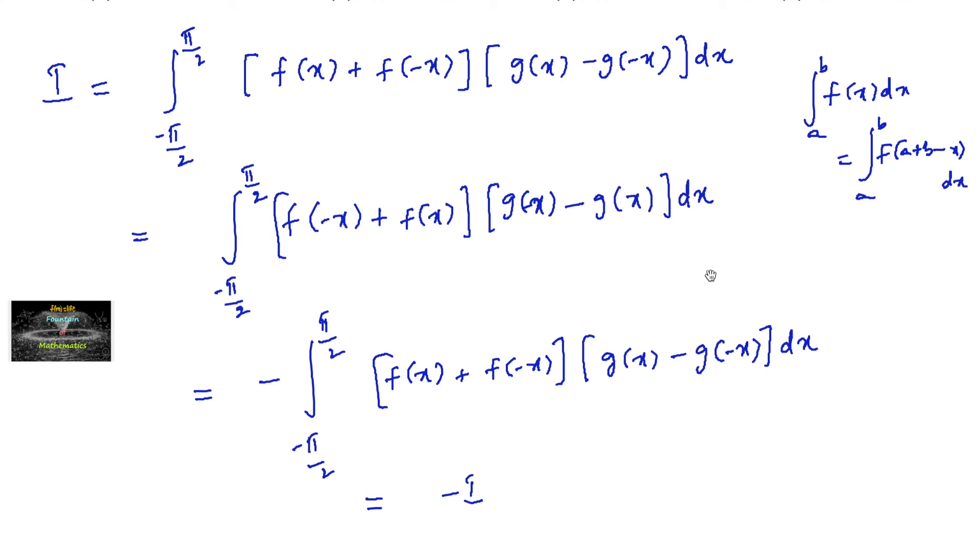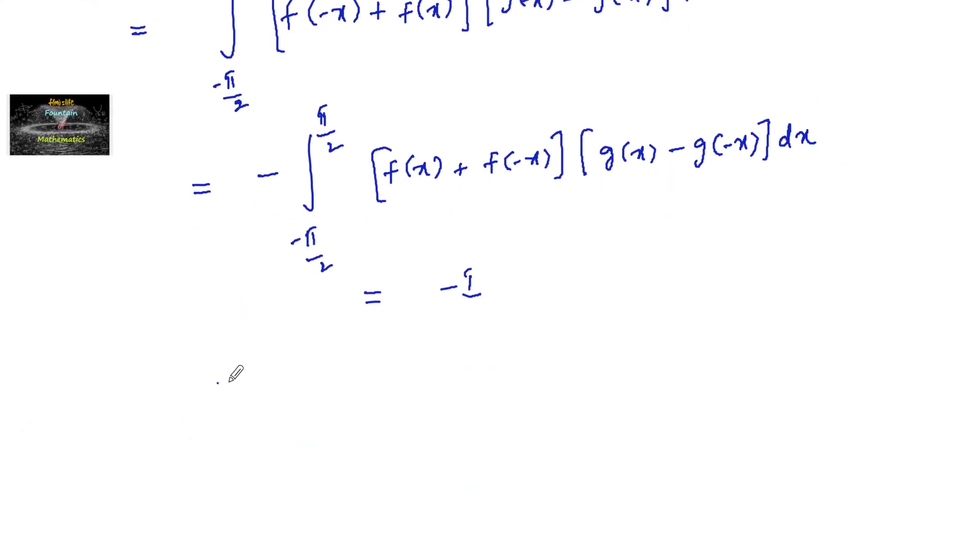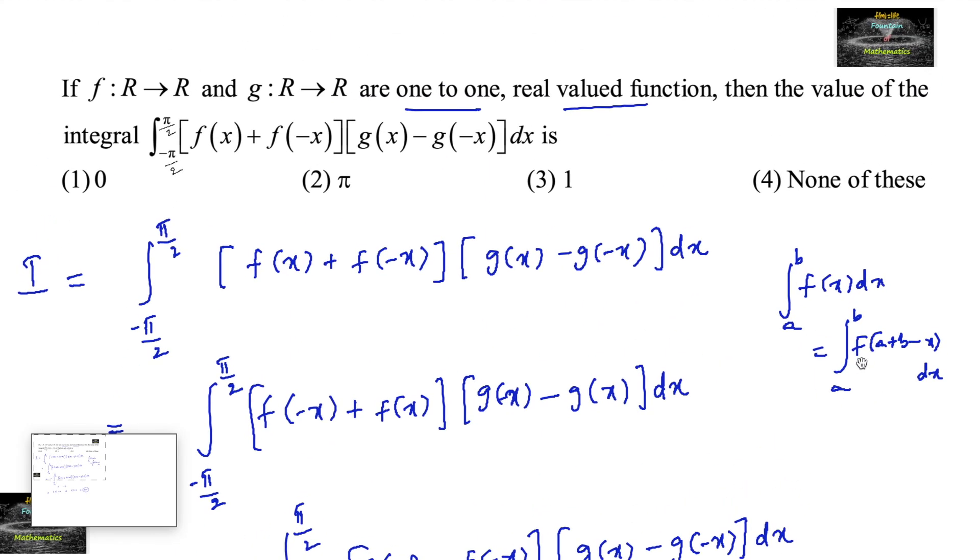Which implies that I plus I equals 0, that is 2I equals 0. Now we can write I equals 0. So our integral value is 0, so first option.